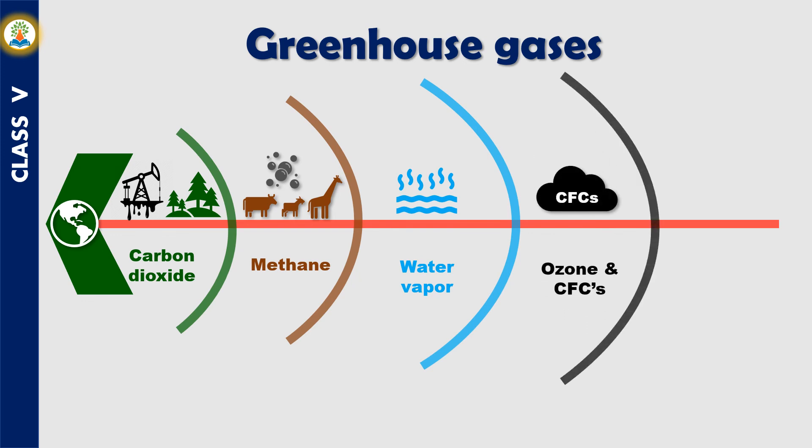Ozone is found in the stratosphere and it blocks the harmful rays of the sun. CFCs are chemicals widely used in refrigerators, air conditioners, and in many other industrial processes. They too warm up the atmosphere and destroy the protective ozone layer.